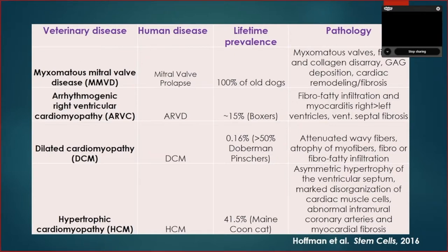My focus today is heart disease. Four fairly common cat and dog heart diseases include: myxomatous mitral valve disease, a model for mitral valve prolapse in humans, with similar histologic changes in collagen and elastin; arrhythmogenic right ventricular cardiomyopathy in boxer dogs, histologically similar to human ventricular changes; dilated cardiomyopathy in large breed dogs; and hypertrophic cardiomyopathy in cats, which affects a fairly high proportion of cats with changes similar to humans.